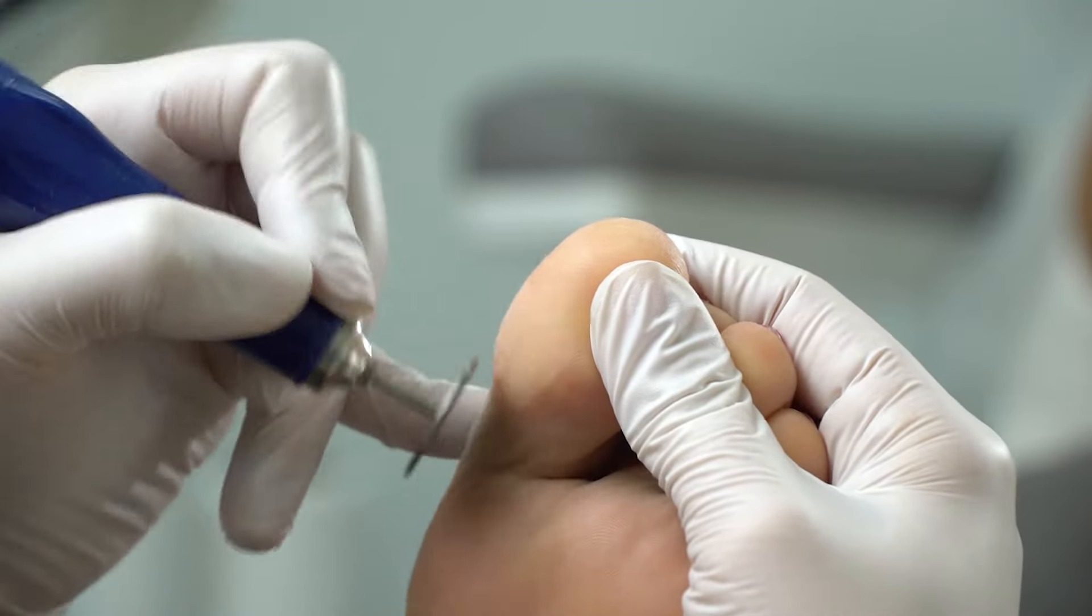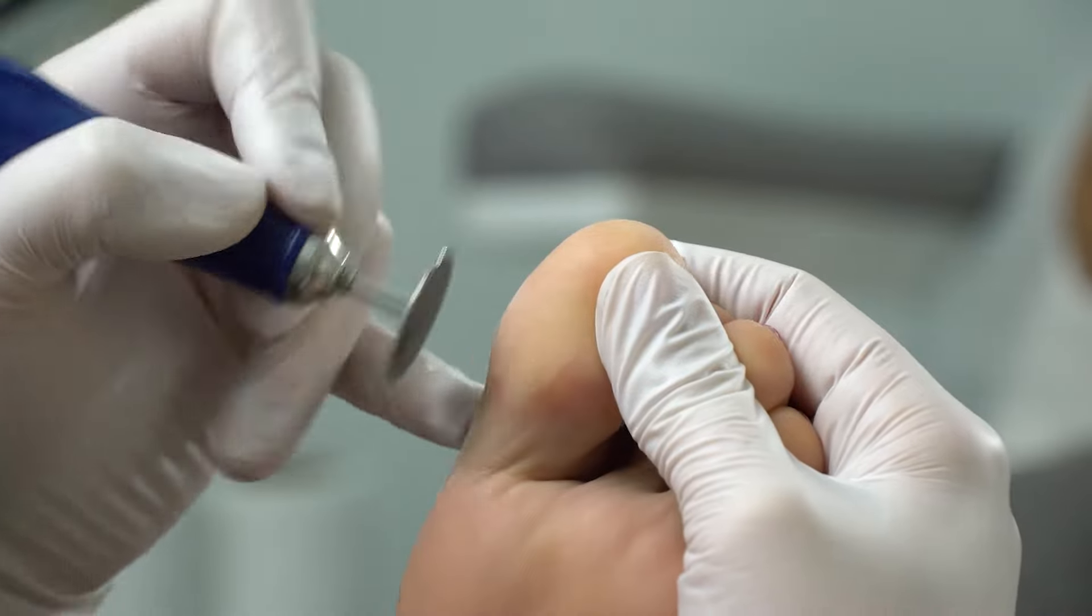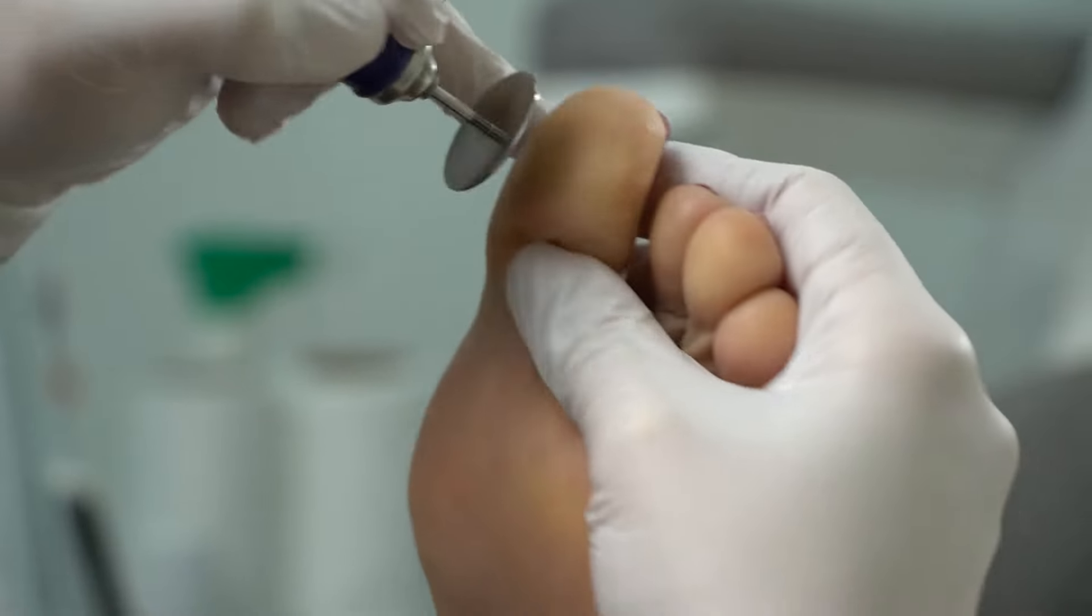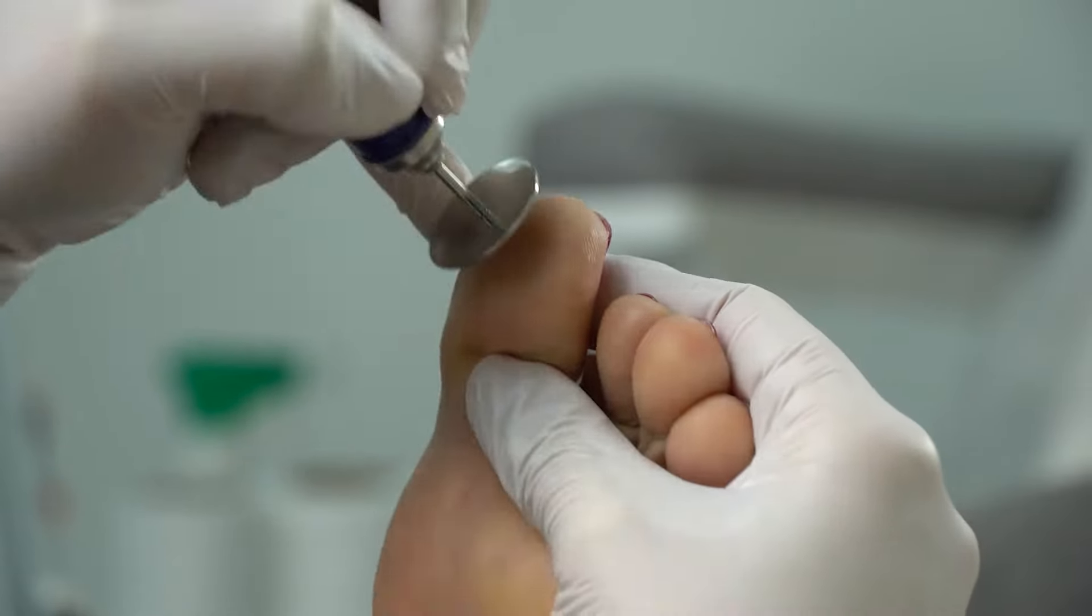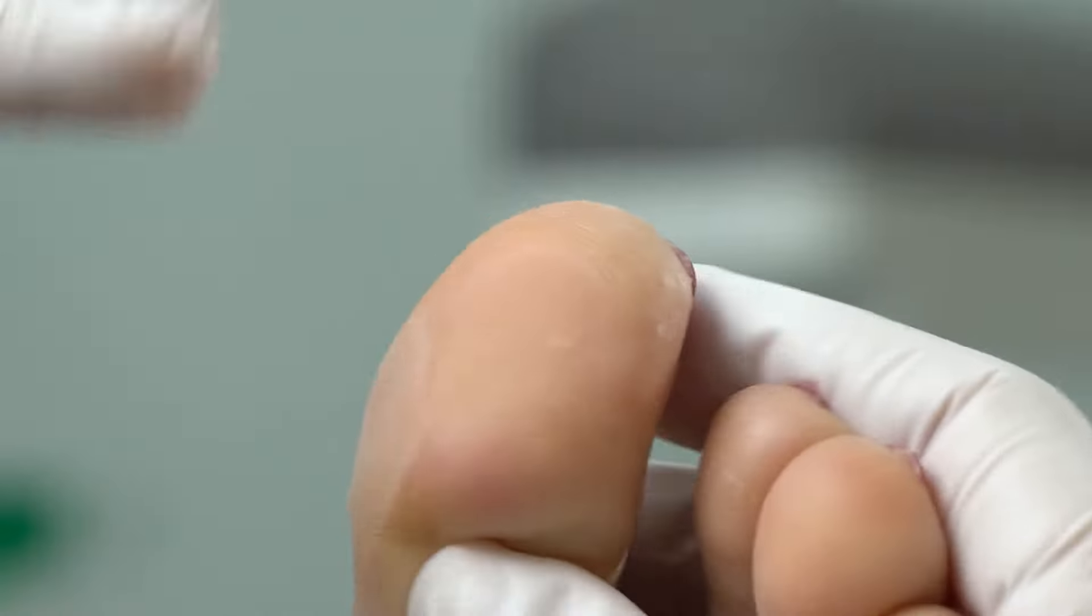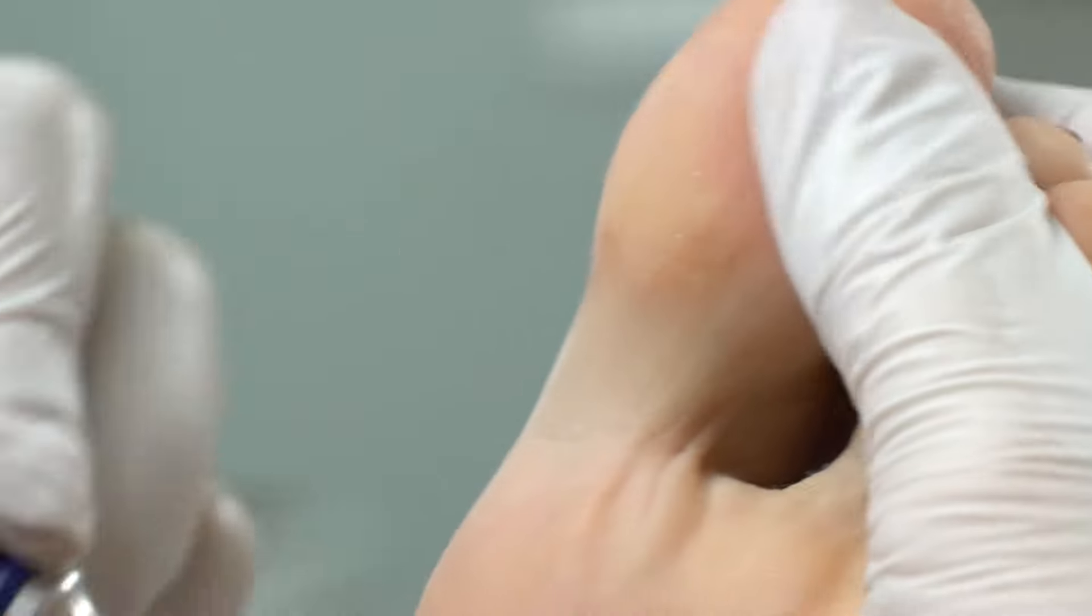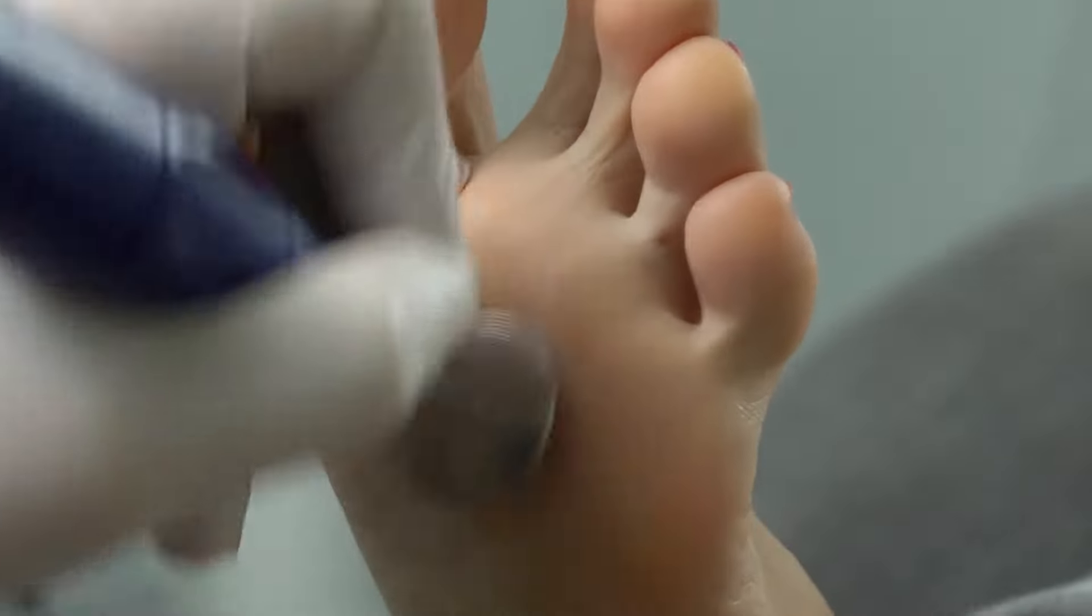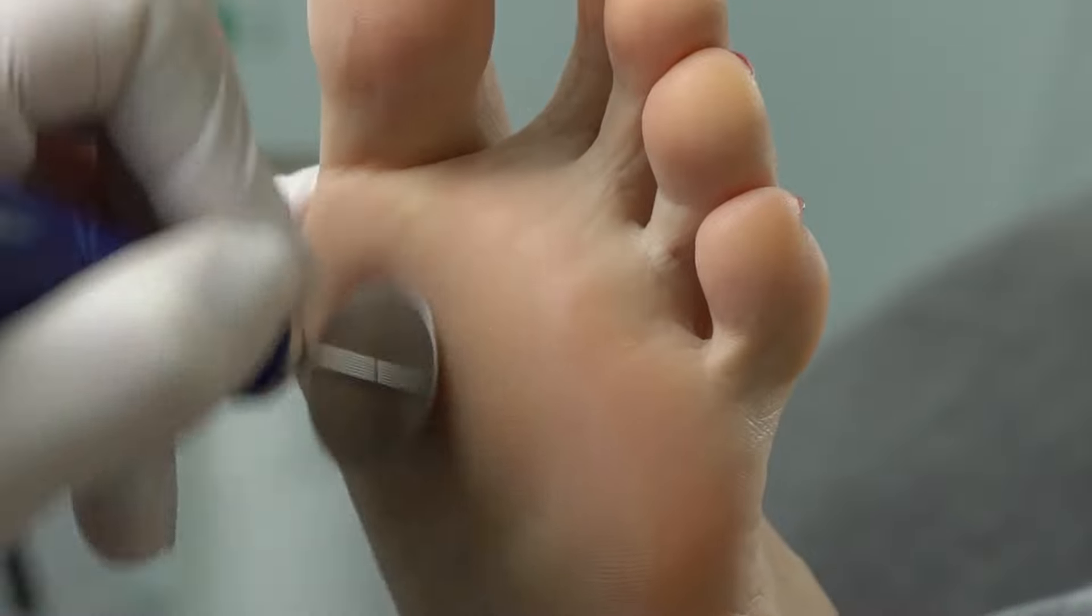We go with the harsh disc first. The abrasive will depend on the client's skin type. It may be 100 to 180 grit for dry feet, and we're using a 180 grit disc right away. Now to polish even the tiniest peelings, to seal the skin and form a membrane, we're using a softer 320 grit abrasive.